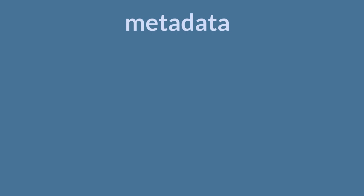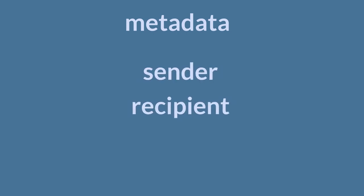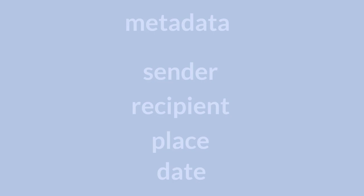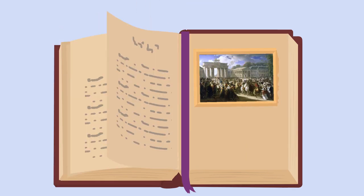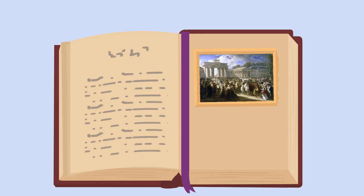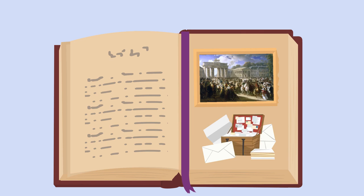CorrespSearch is designed to help you search letter editions using correspondence metadata — for example, information on the sender, the recipients, the place, or date when the letter was written. This can be illustrated by a short example, which is set in October 1806 when Napoleon Bonaparte marched into Berlin, an event that naturally preoccupied many contemporaries at the time and was therefore the subject of countless correspondences.